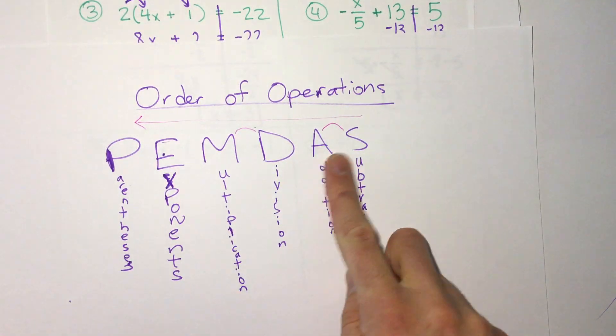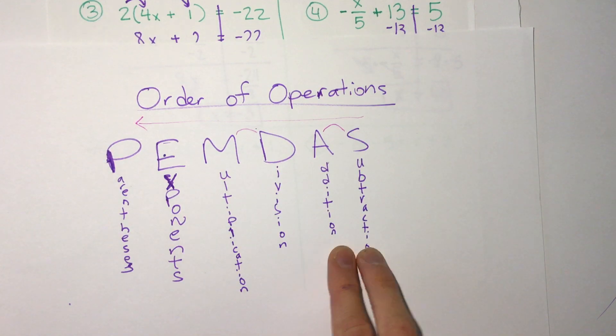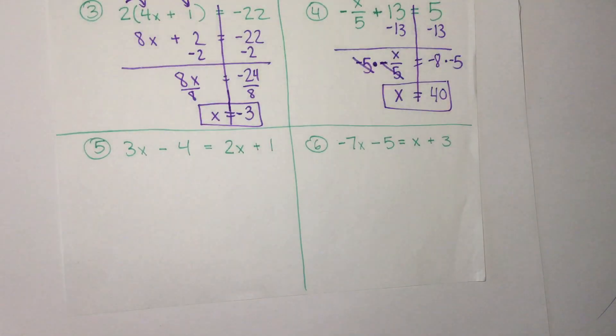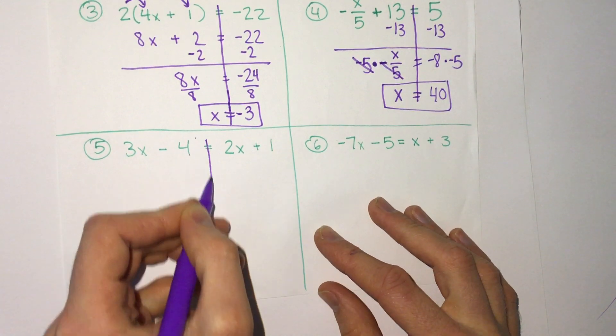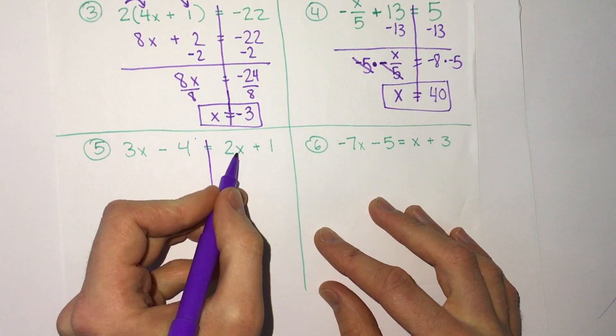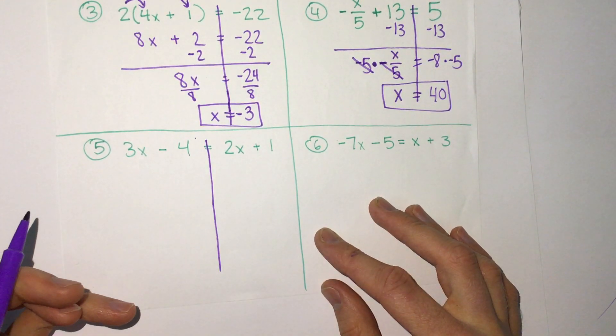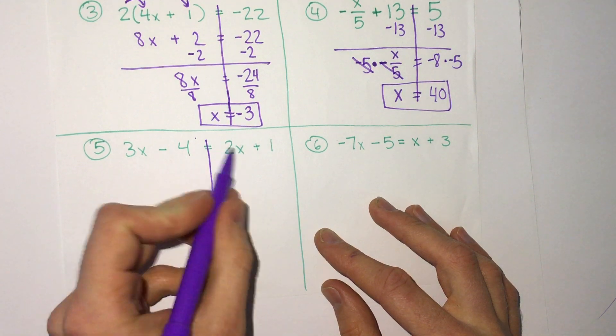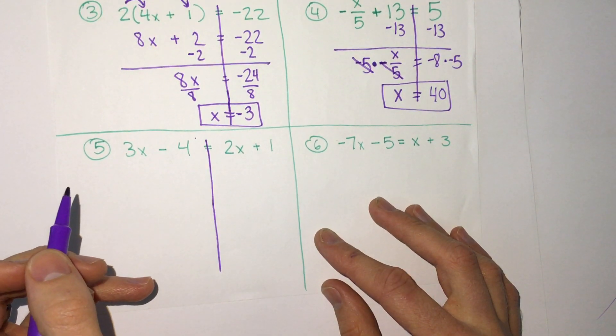We still follow our order by looking at addition and subtraction first, but we might have to do multiple movements with addition and subtraction. Notice here, we have 3x minus 4 equals 2x plus 1. One thing that we have is x's on both sides.